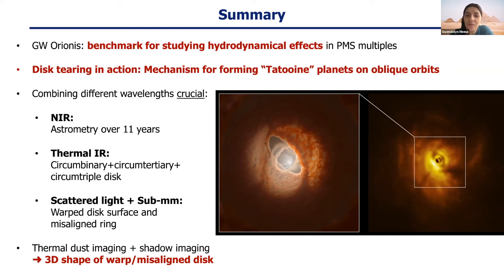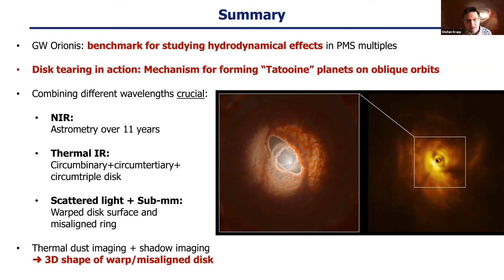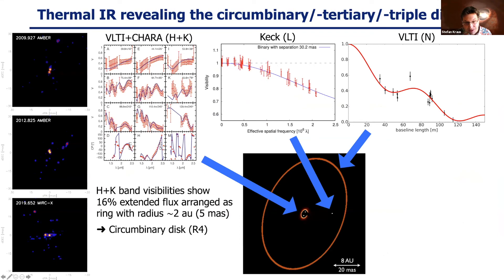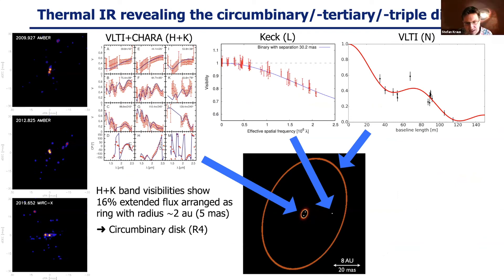Question from Michael Stelzik: does the misaligned inner circum-binary disk help to shrink the inner binary orbits, enhancing the tidal friction in Kozai cycles induced by the tertiary, and would that be measurable? The presenter asks for clarification: by circum-binary disk, do you mean the component at 0.2 astronomical units — the inner, inner component? Clarified: the misaligned ring seen with ALMA.